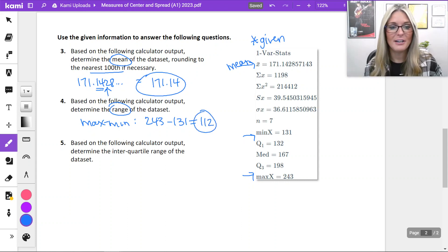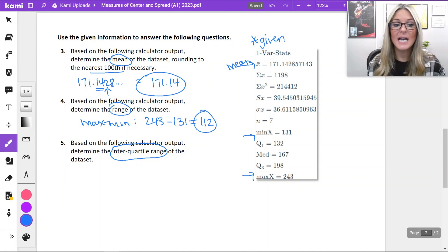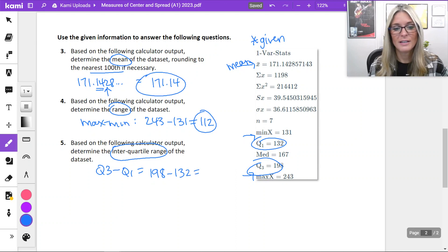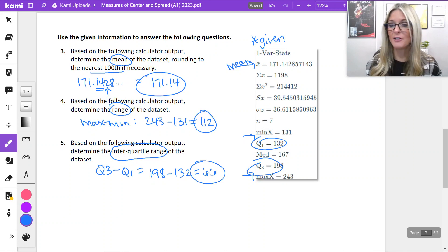Number five, based on the calculator output, determine the interquartile range or the IQR. Again, not specifically on this list, however, I can take the Q3 and subtract the Q1 that is provided. Here's Q3 and Q1. So 198 minus 132 gives me 66. IQR, 66 based on our calculator output.